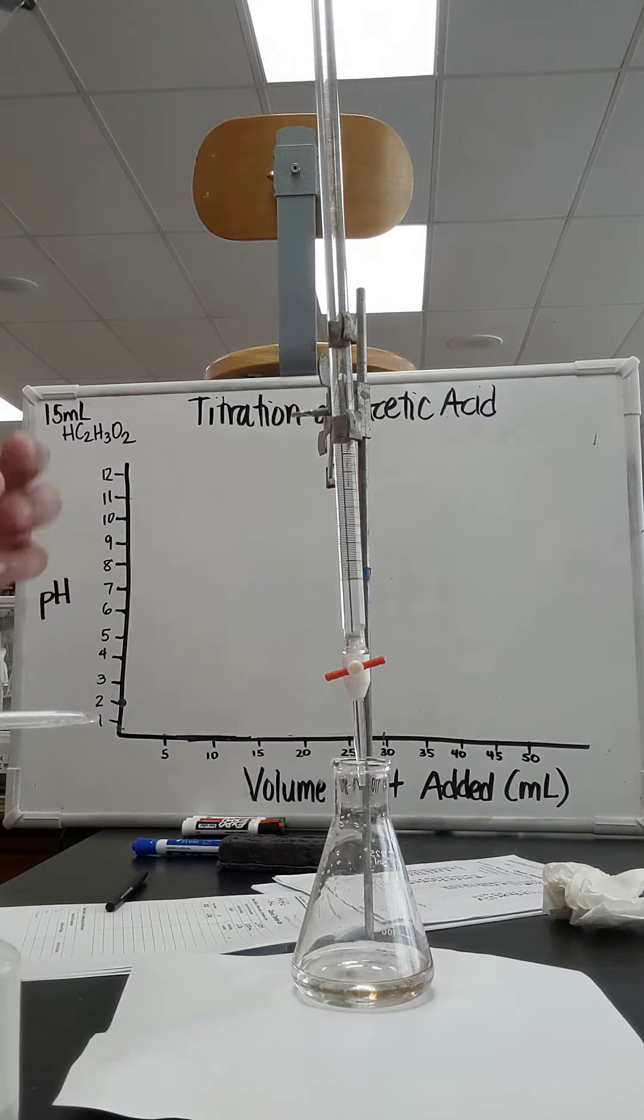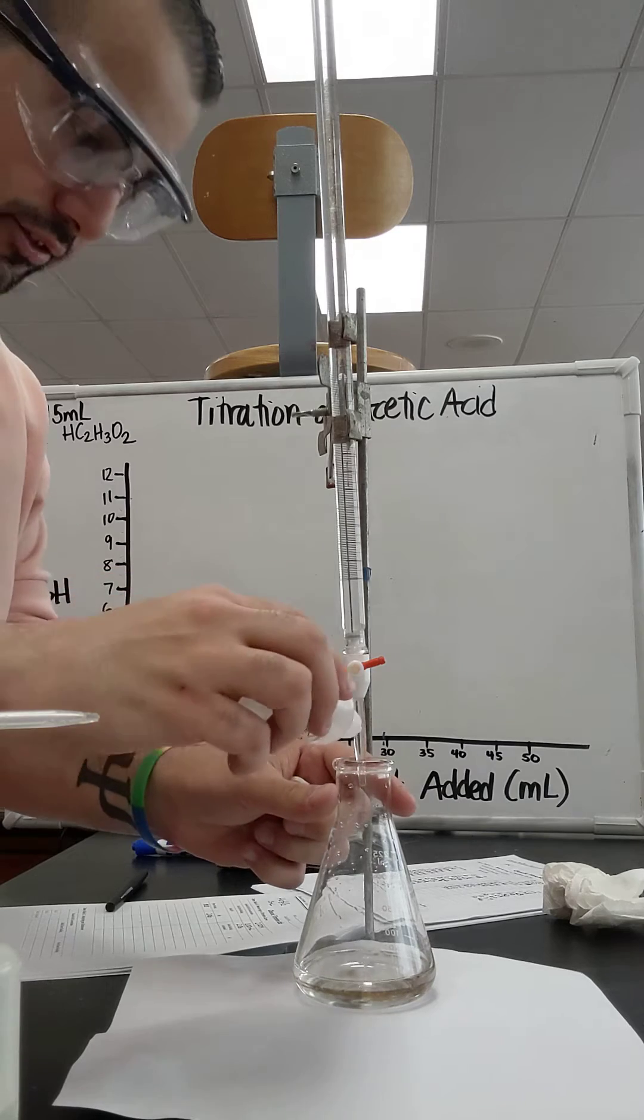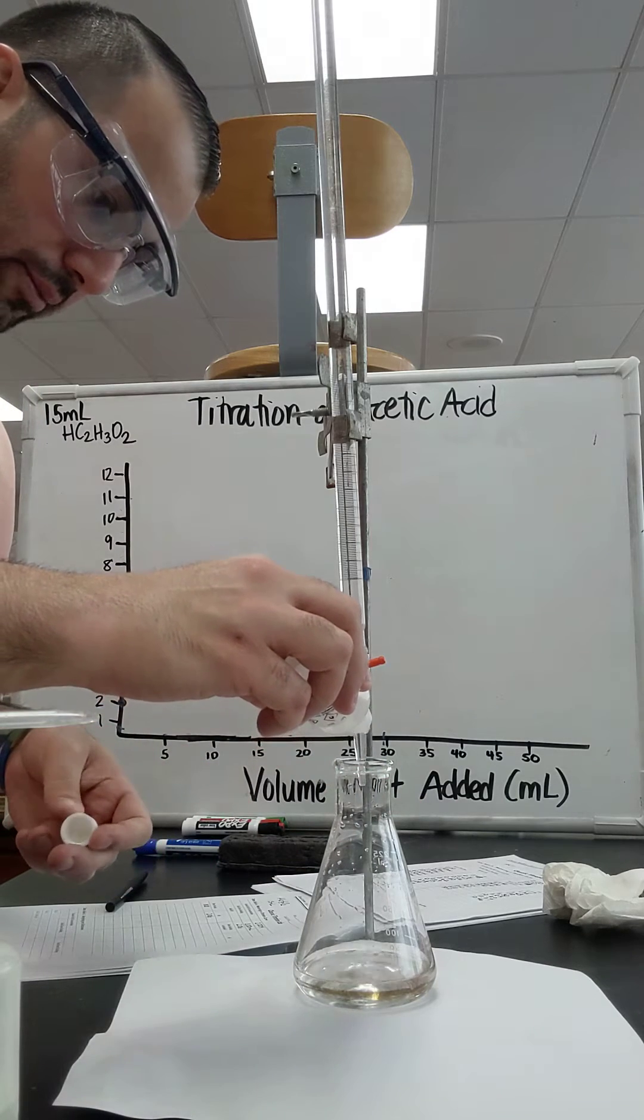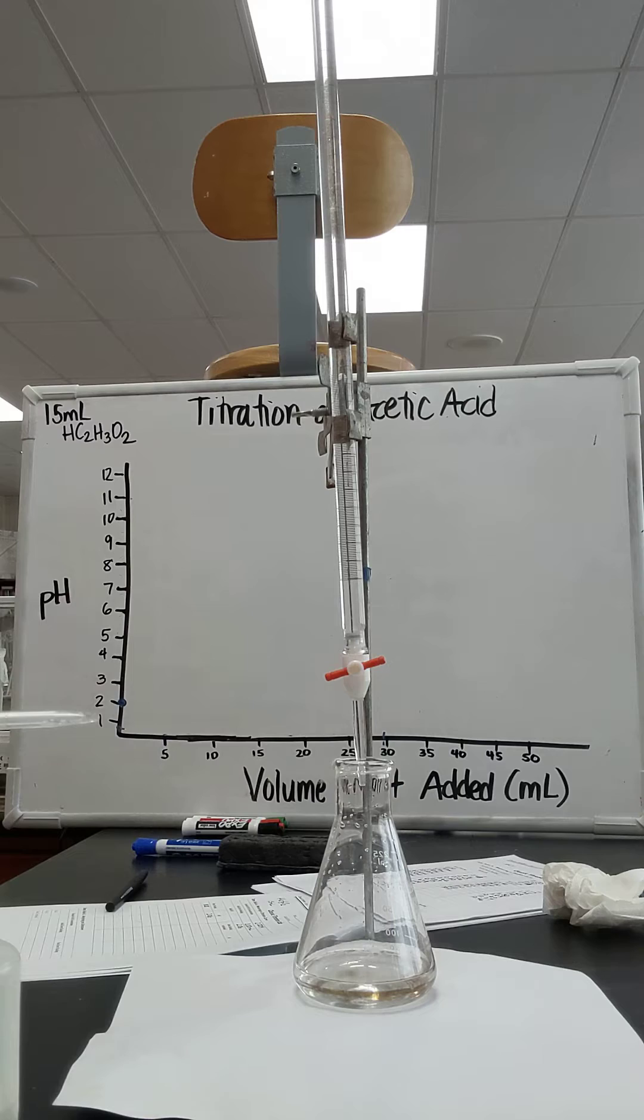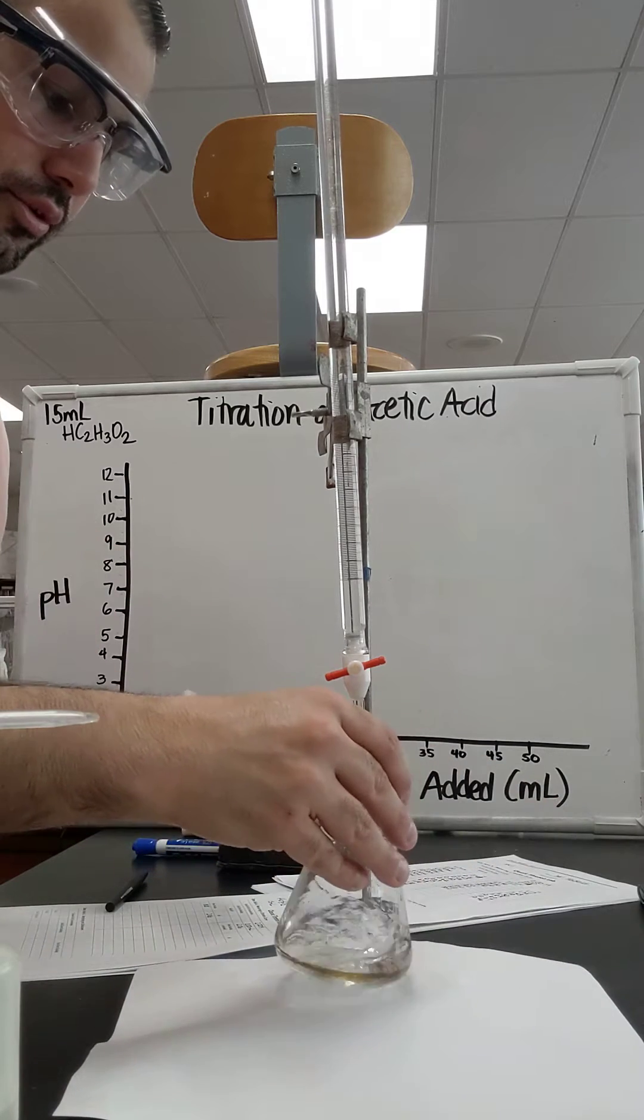Alright, now before we do the titration, we've got to add some phenolphthalein acid-base indicator. I did a couple of drops and I'm going to swirl that in there.